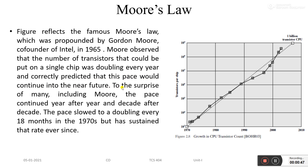To the surprise of many, including Moore himself, the trend continued year after year and decade after decade. The pace slowed to a doubling every 18 months in the 1970s. According to his statement, the doubling of transistor count on the same area of a chip was observed in ICs, and this trend became known as Moore's Law.